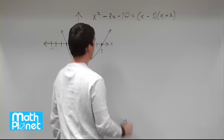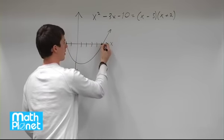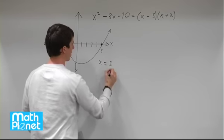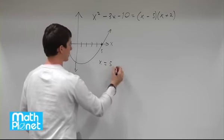Again negative 2 here gives us negative 2 plus 2 is 0. 0 times something else gives us 0. So our two answers are just these two points where we cross this x-axis at x equals positive 5 and x equals negative 2.